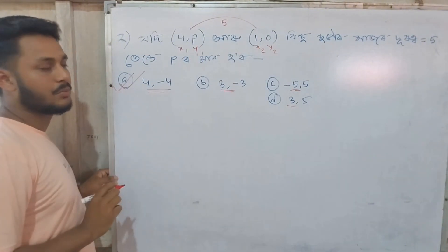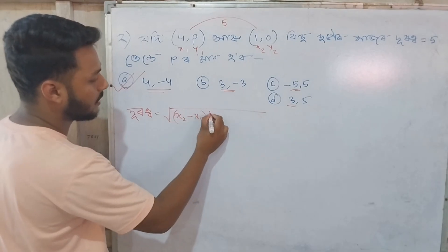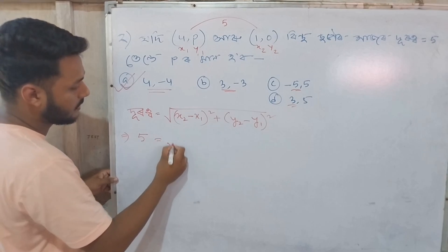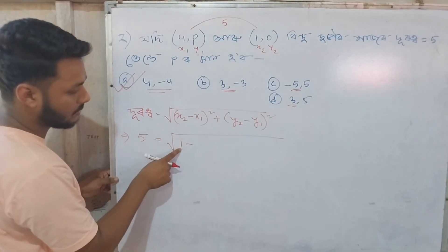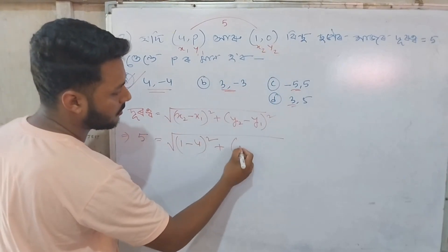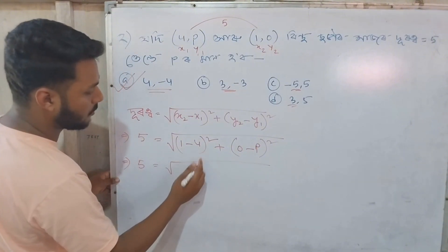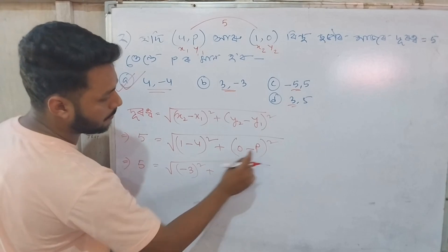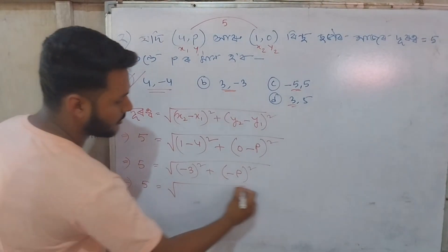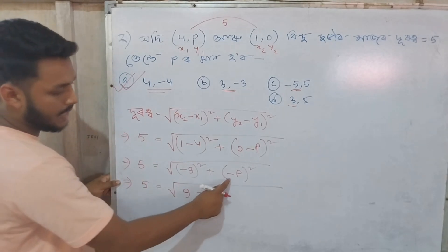The distance formula: root of (x2 minus x1) whole square plus (y2 minus y1) whole square. Here x2 minus x1 equals a minus 0, and y2 plus y2 equals 0, then 0 minus y1 equals p. So: 5 equals root of (4 minus 3) squared plus (0 plus p) squared, giving 5 equals root of 1 plus p squared, minus p.